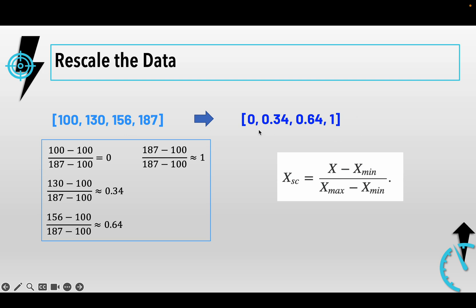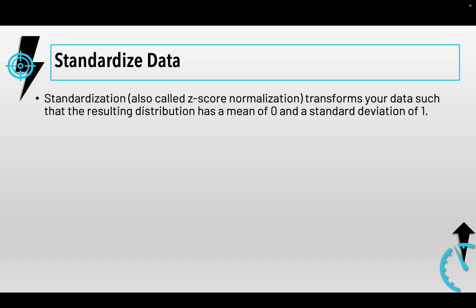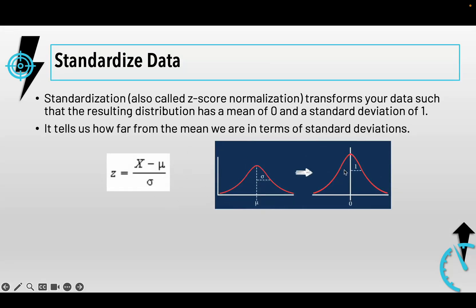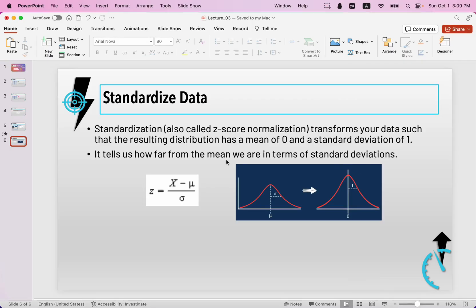The second technique for data rescaling is standardization. Standardization transforms your data such that the resulting distribution has a mean of zero and a standard deviation of one. The formula uses the original x minus the mean, divided by the standard deviation. The data is transformed to a standard normal distribution, with mean equal to zero and standard deviation equal to one. Now let's go to Colab to practice.